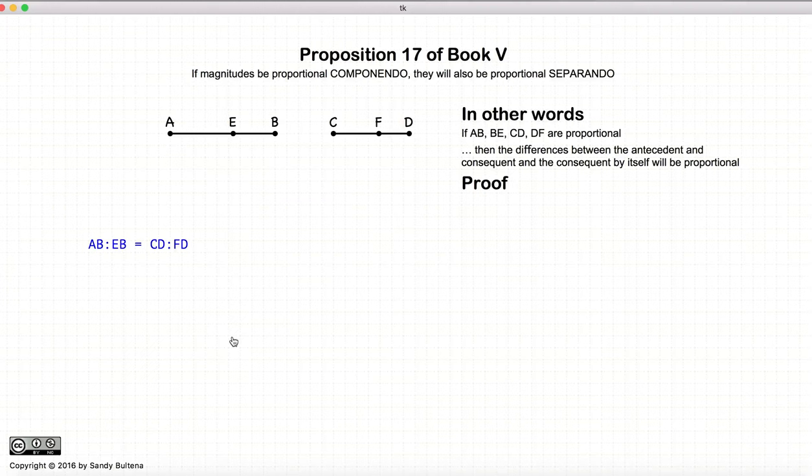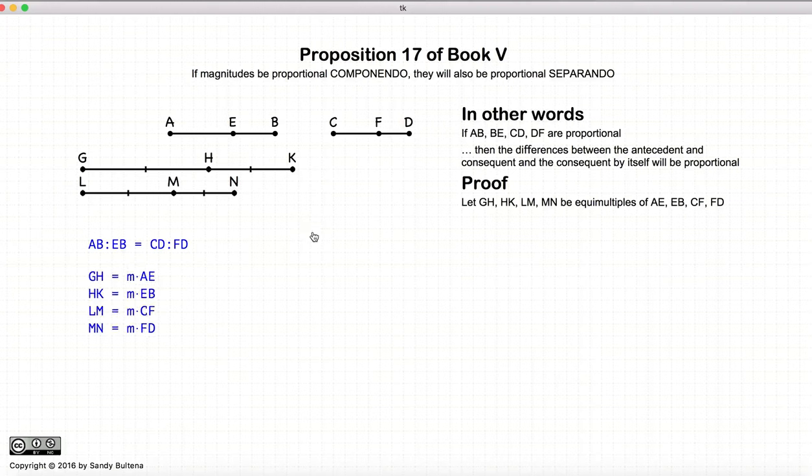So here we go, let's prove it. A to B is to E to B as C to D is to F to D. That is our starting condition. Now we start creating new magnitudes, GH, HK, LM, and MN, which are equal multiples of AE, EB, CF, and FD, respectively.